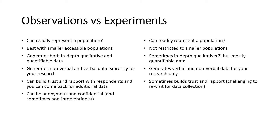With observations you can be anonymous and confidential, and sometimes non-interventionist — not letting people know you are observing them. There are some ethical issues with that, but there have been a number of cases where observers have not revealed their presence. With experiments you can be confidential, but it's very hard to be anonymous because you are the scientist present there, and you can't be non-interventionist because you are part of the data collection process.